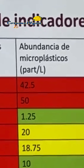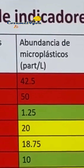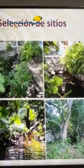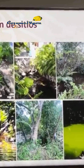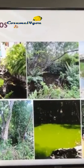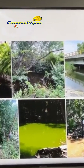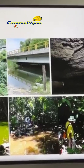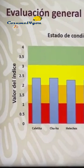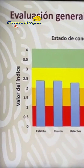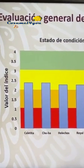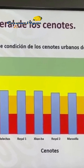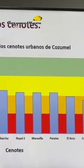Microplastics currently represent an emerging contamination that is increasingly present in studies of bodies of water. Once all the indicators have been evaluated, a general indicator is obtained where it can be seen that we do not have cenotes in very good condition, but we do not have cenotes in very poor condition either. The average reading is between fair and good, which represents a great possibility and opportunity to reverse the unfavorable conditions of these bodies of water.